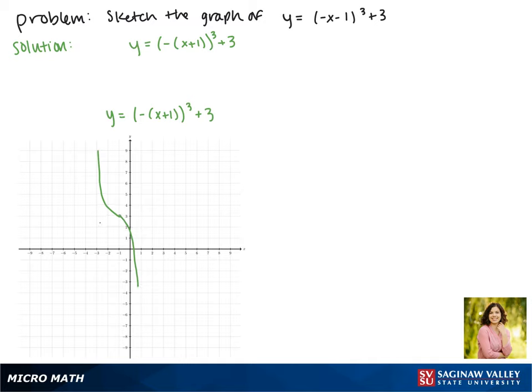And now it passes through the point negative 1, 3. And this is the graph of our function.